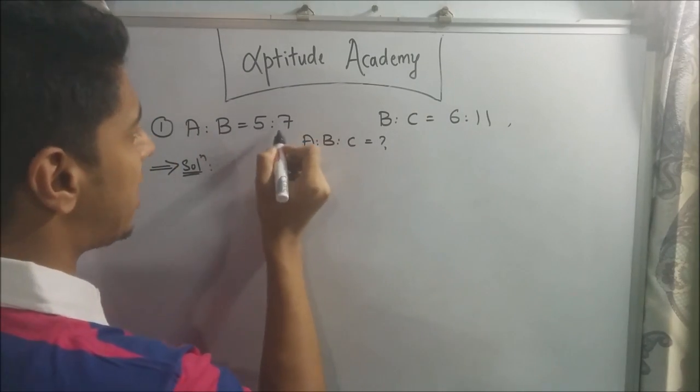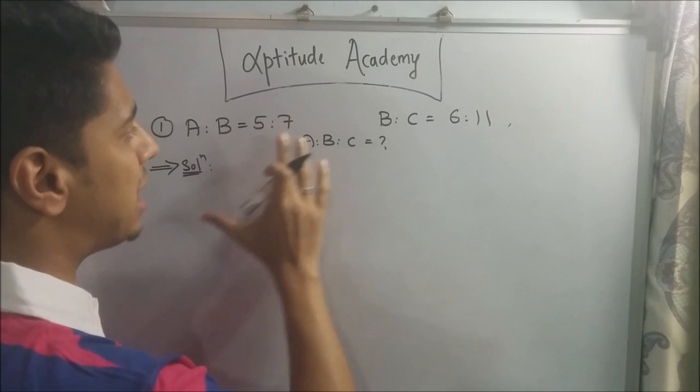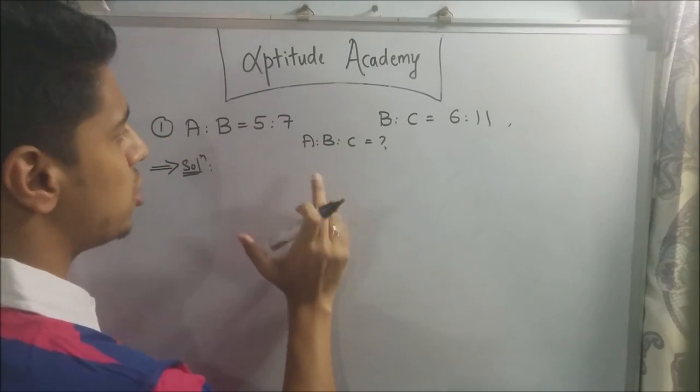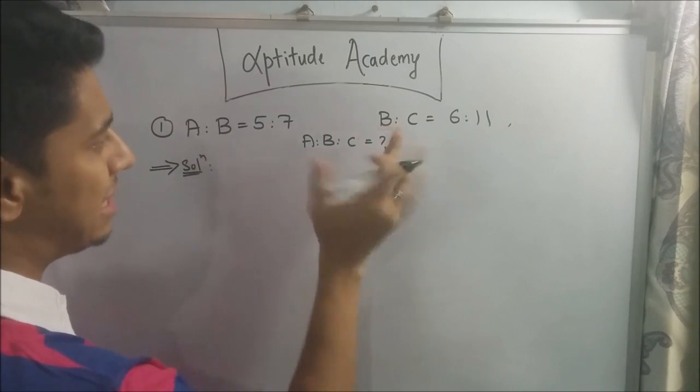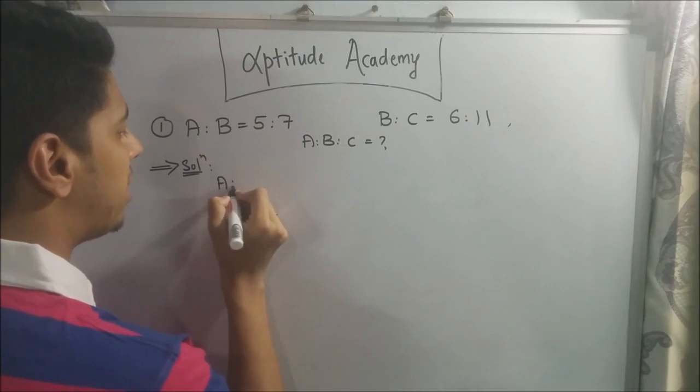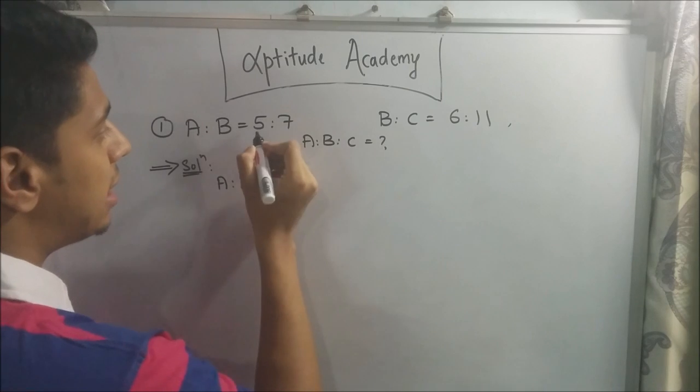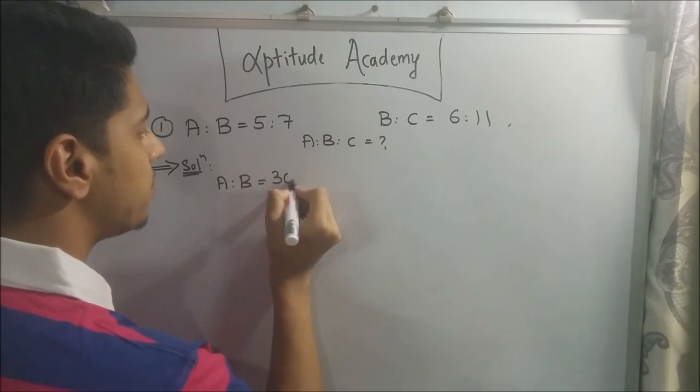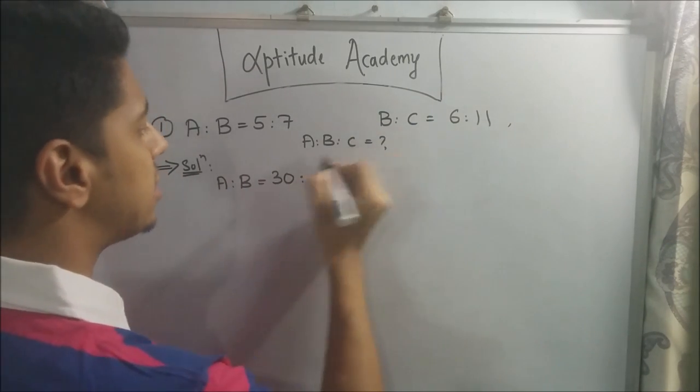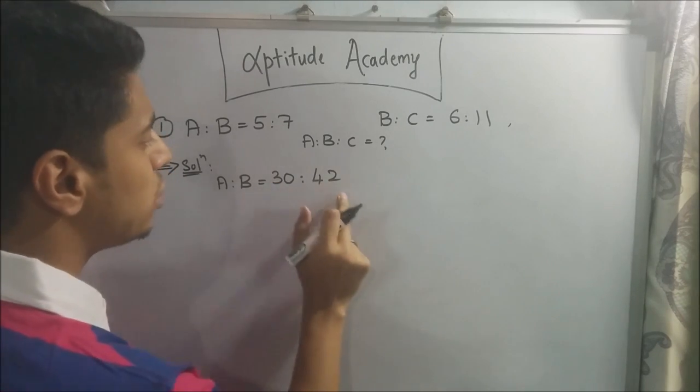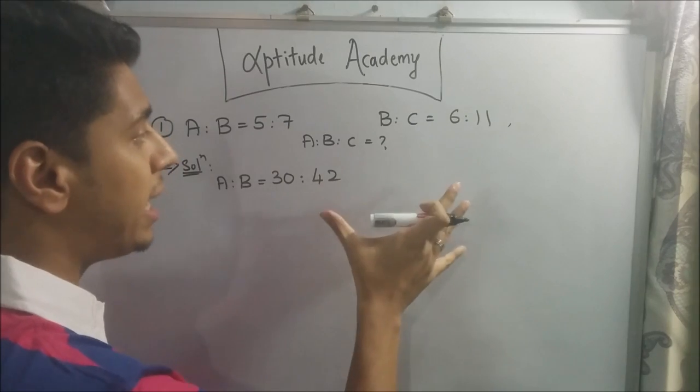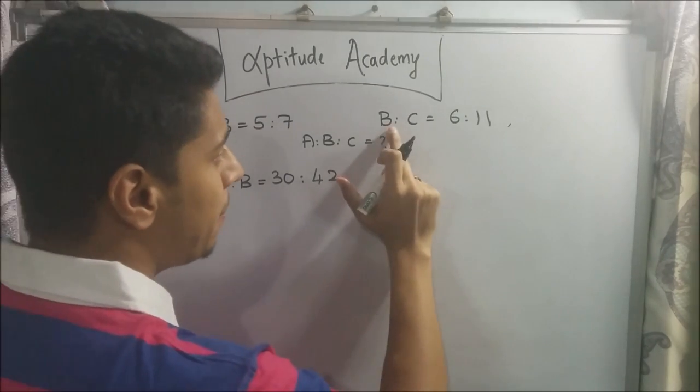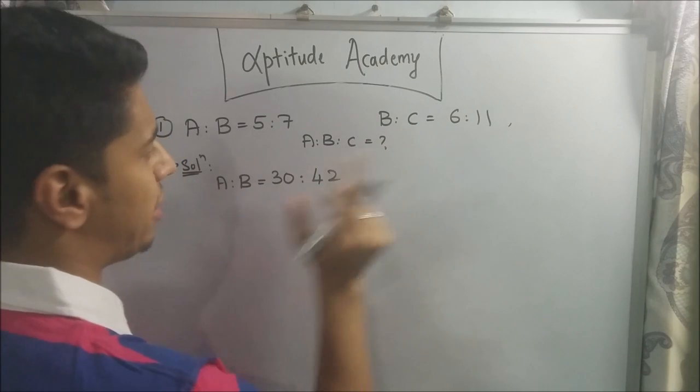So you've got 7 here and you've got 6 here. Now the easiest way is to multiply 6 into this ratio and 7 into this ratio. So what we'll do is we'll multiply this ratio by 6. Now a is to b will remain the same because it won't matter. 5 into 6 is 30. 7 into 6 is 42. Now 30 is to 42 is the same as 5 into 7. I'm just multiplying it and manipulating it so that we can reach our answer. Now I will multiply this ratio by 7.